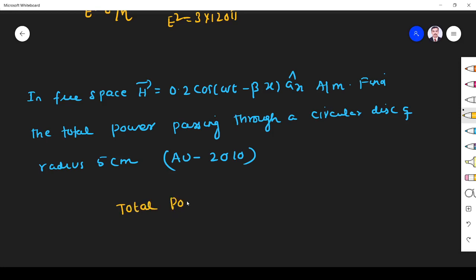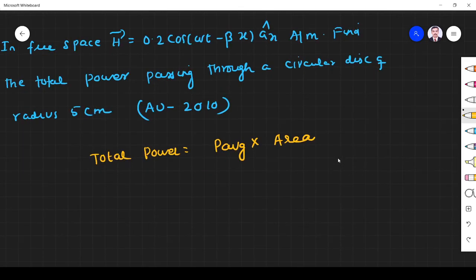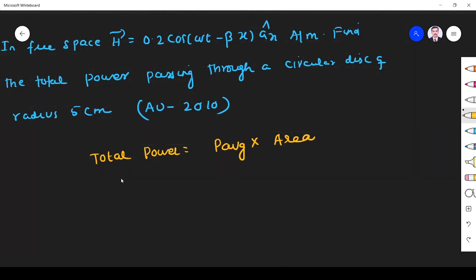I want total power. Total power is given by average power multiply by area. Average power into area is given by total power, because power is the power flowing at the particular point. If you multiply by area you will get total power. So first I find average power.